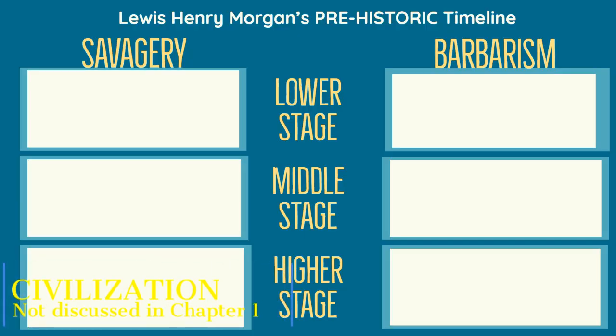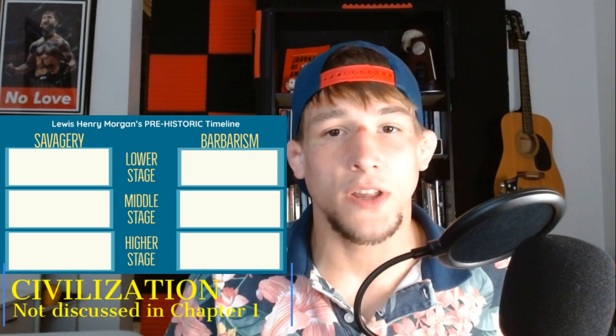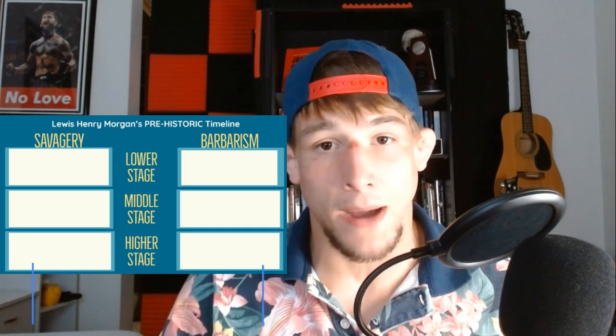Lewis Henry Morgan's Ancient Societies breaks prehistory into three main epochs: savagery, barbarism, and civilization. These are divided into three further subcategories based on the level of productive development within those epochs — ranging from low to medium to high. The epoch of savagery is a little bit hard to look at because there's very little historical record due to the low level of productive capacity that humans had at the time.